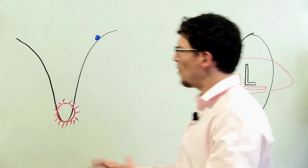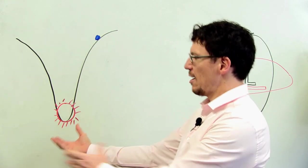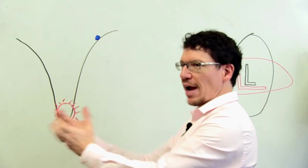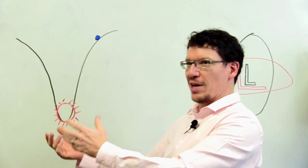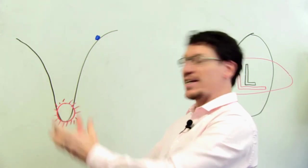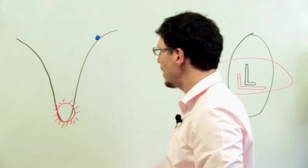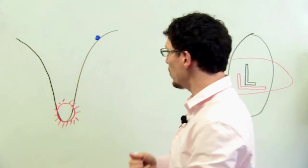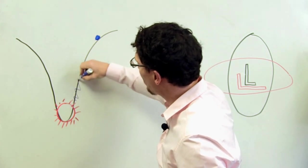So what is a gravitational wave? Now imagine we took the sun and we shook it. We shake it violently. Take this object 300,000 times the mass of the Earth and shake it. What would happen is that this gravitational well would stop being smooth and it would start having ripples.